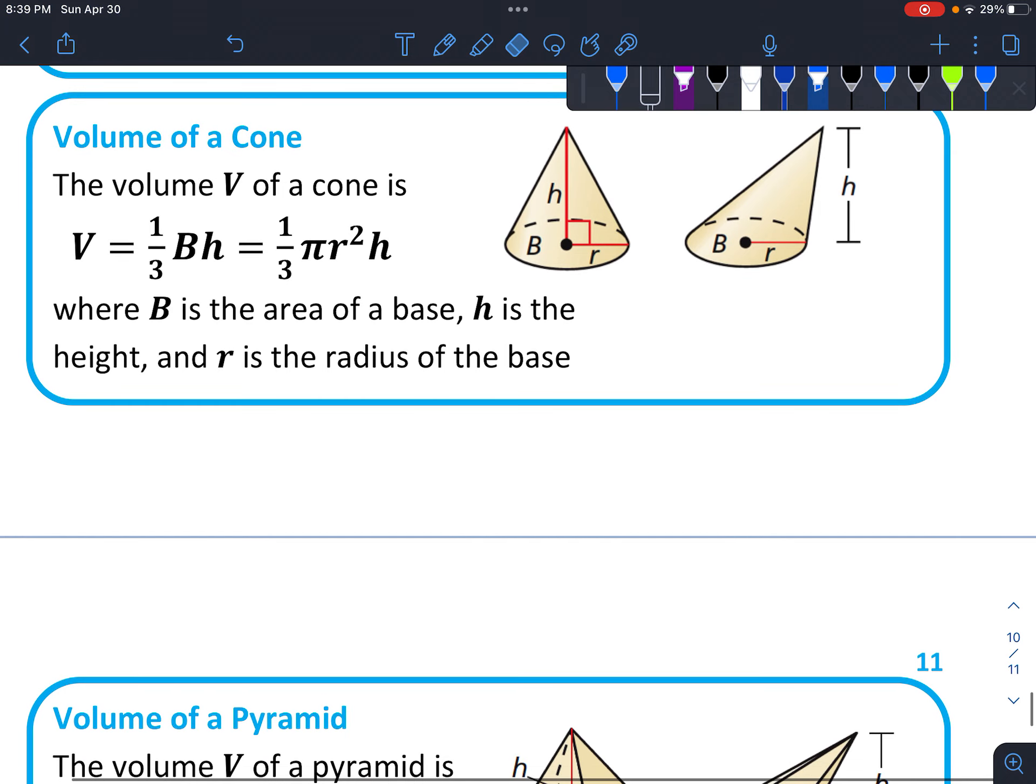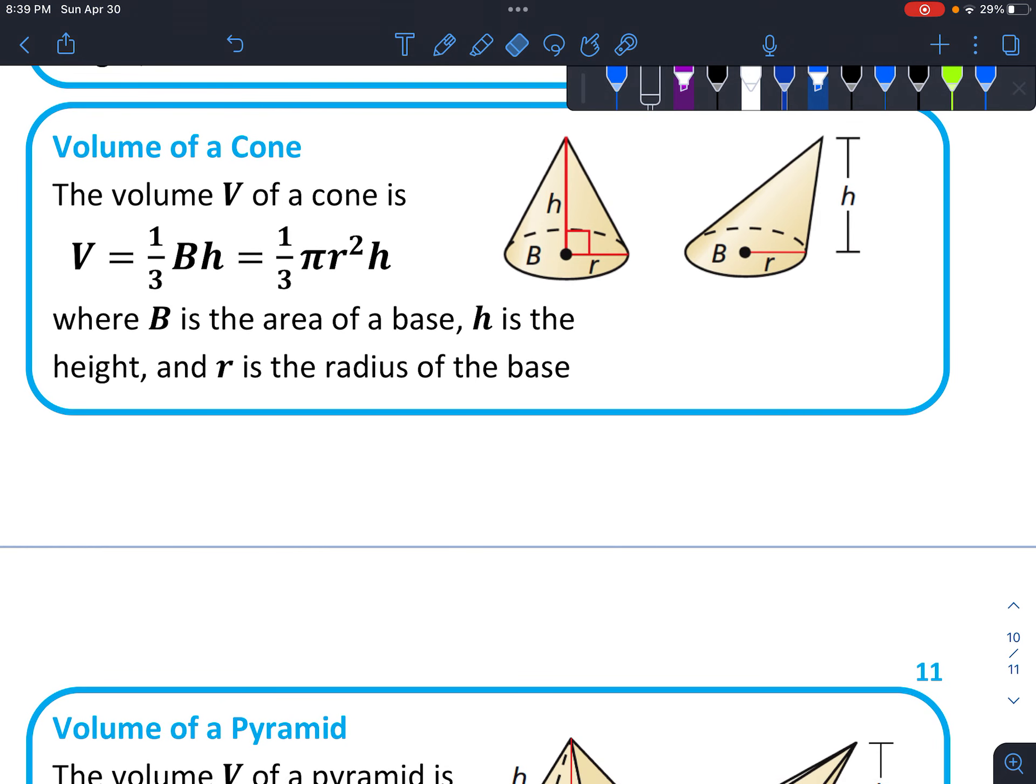And then a cone is a little different. This time it's actually not going to have the same cross-section for each one, but they've calculated and figured out that you multiply the base times the height and multiply by one-third. So since the base is circular, that's where you get the pi r squared in here. So one-third times pi r squared times height.